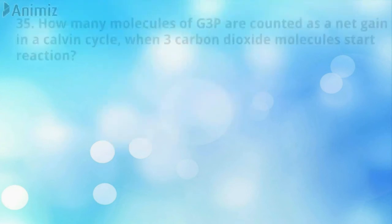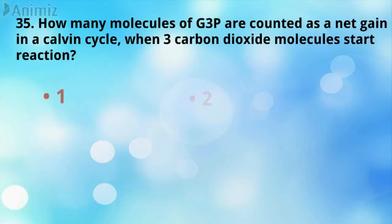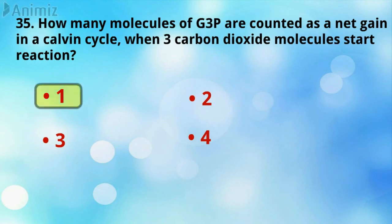How many molecules of G3P are counted as net gain in the Calvin cycle when three carbon dioxide molecules start the reaction? One molecule of G3P.